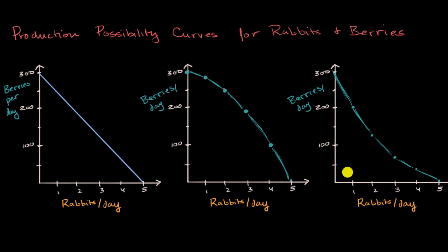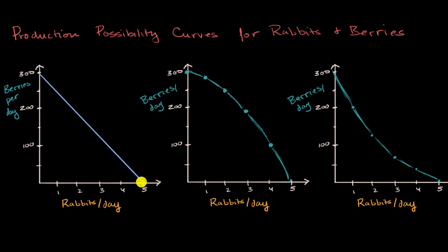We have three different possible production possibilities curves for rabbits and berries here, which we've already talked about in other videos. The reason I'm showing you three different curves is because they clearly have different shapes. One looks like a straight line, one looks like it's bowed out from the origin, and one looks like it's bowed in to the origin.